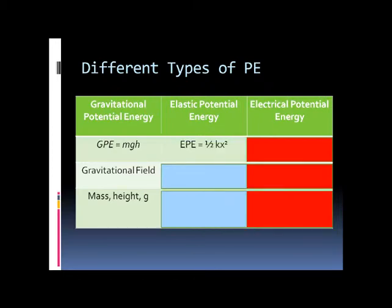Elastic Potential Energy is something that we have learnt in forces. EPE is equal to half kx squared, where k is the spring constant and x is the extension or compression of the spring.